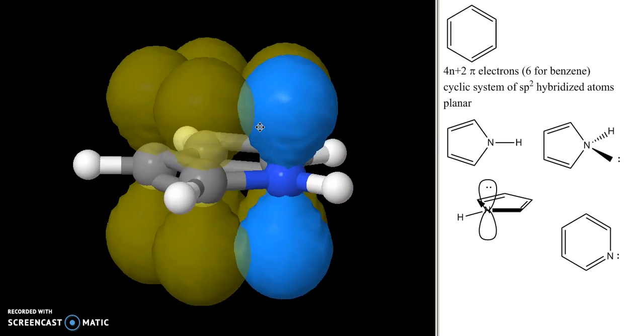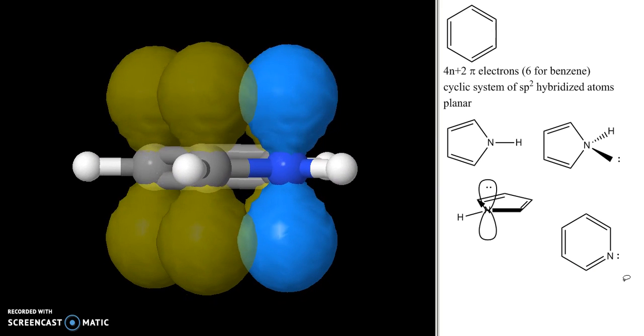In order to understand that, we need to think about this lone pair of electrons and where they are and their orientation with respect to the other pi electrons in this molecule. In particular, we need to remember that these electrons are in an sp2 orbital. If we look at a model of this...